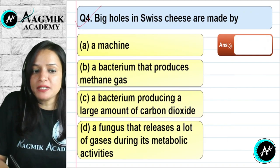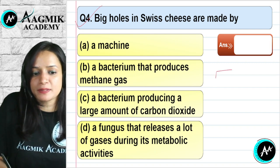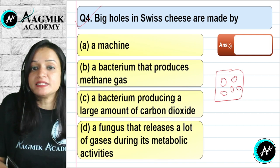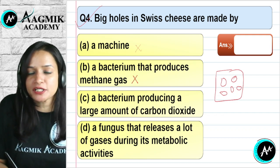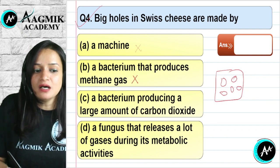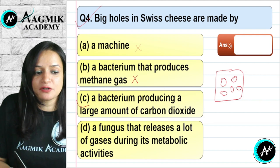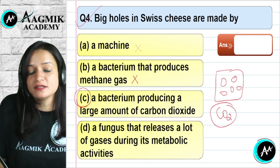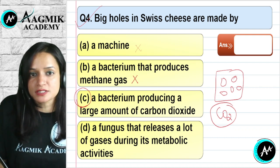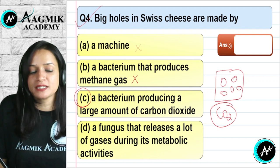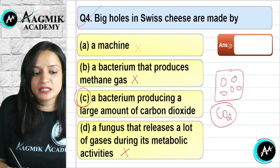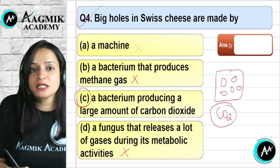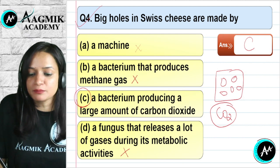Question number 4: What causes the big holes in Swiss cheese? It is not made by a machine, and methanogens are not used. A bacterium producing a large amount of carbon dioxide is responsible — the CO2 production creates the big holes in Swiss cheese. The fungus option releasing gases is also not correct. The correct option is C.